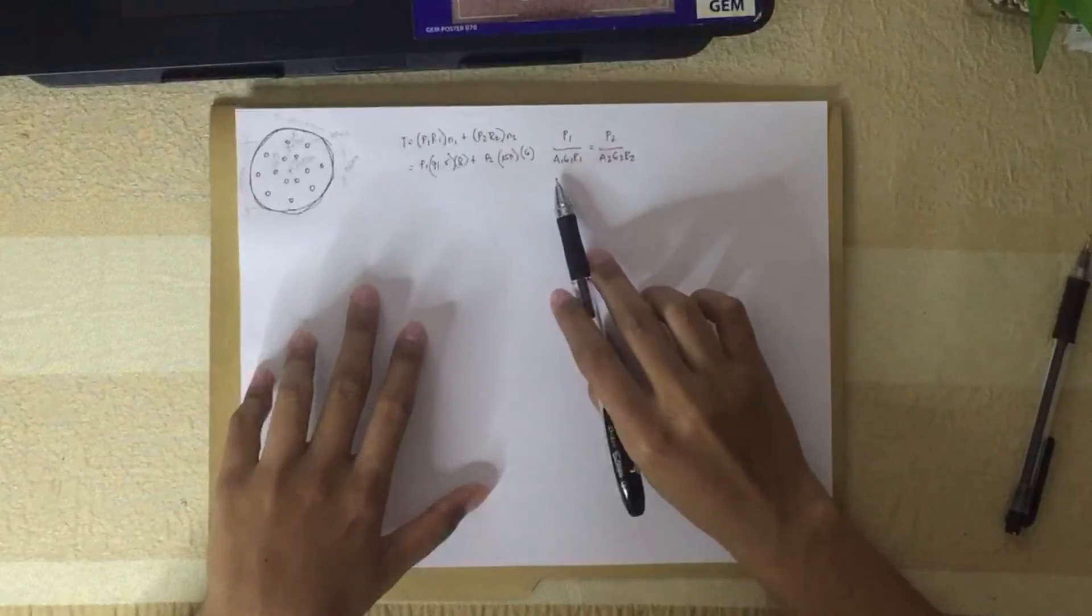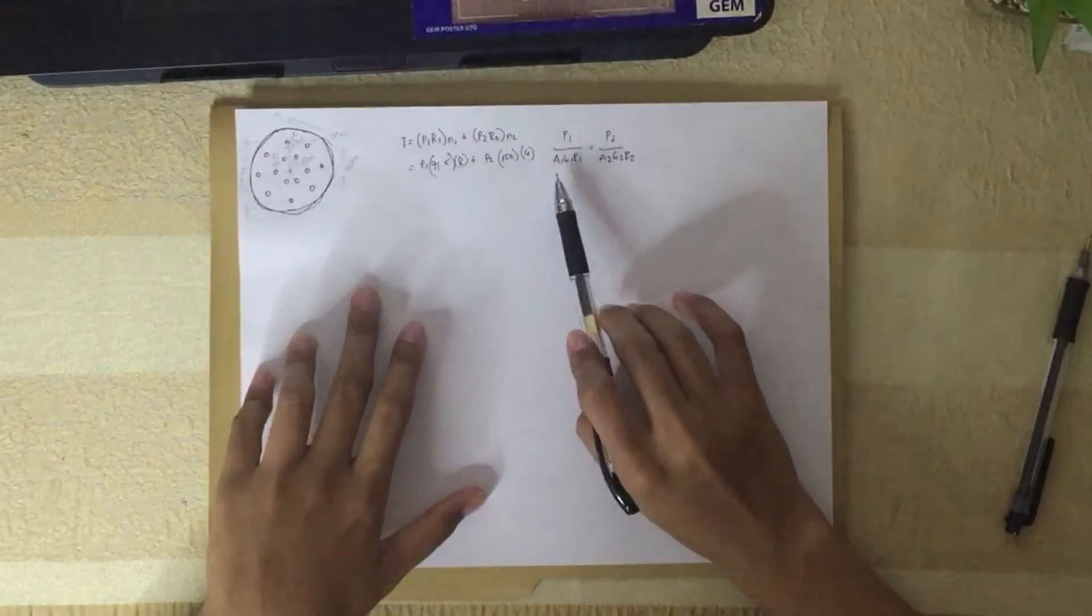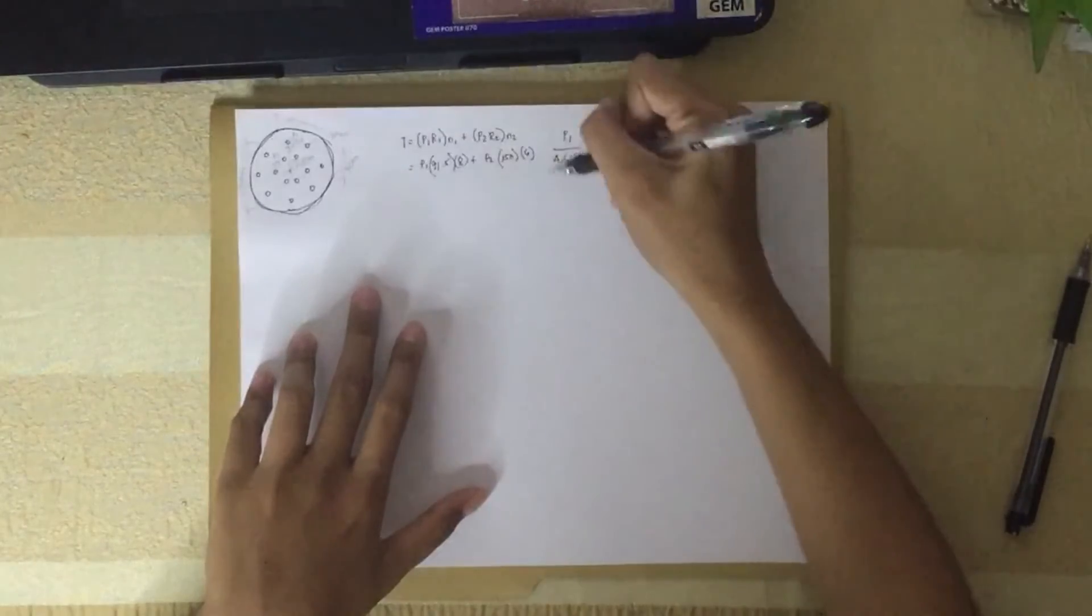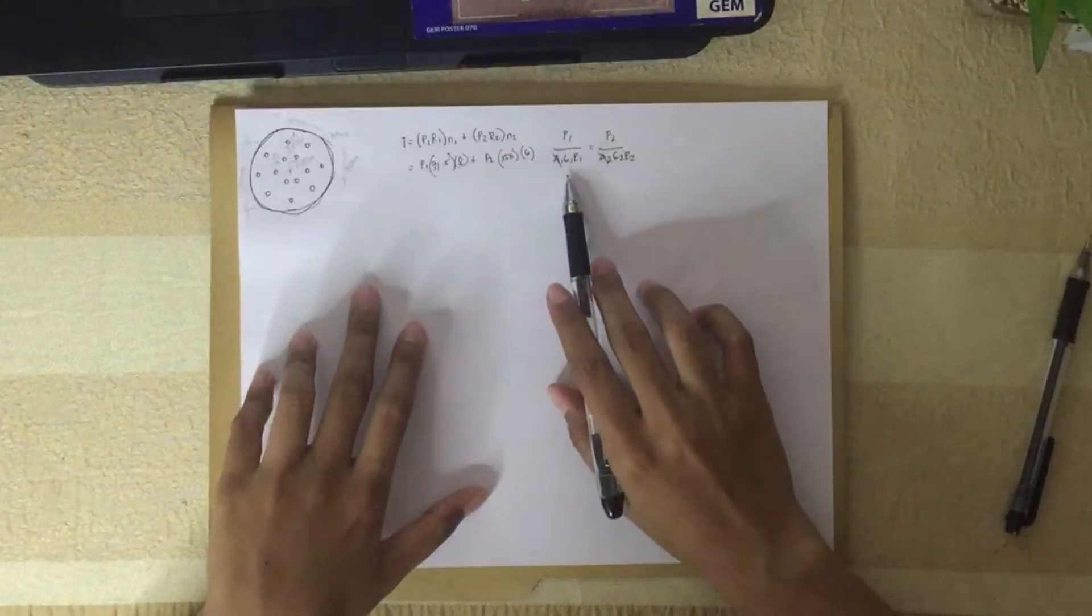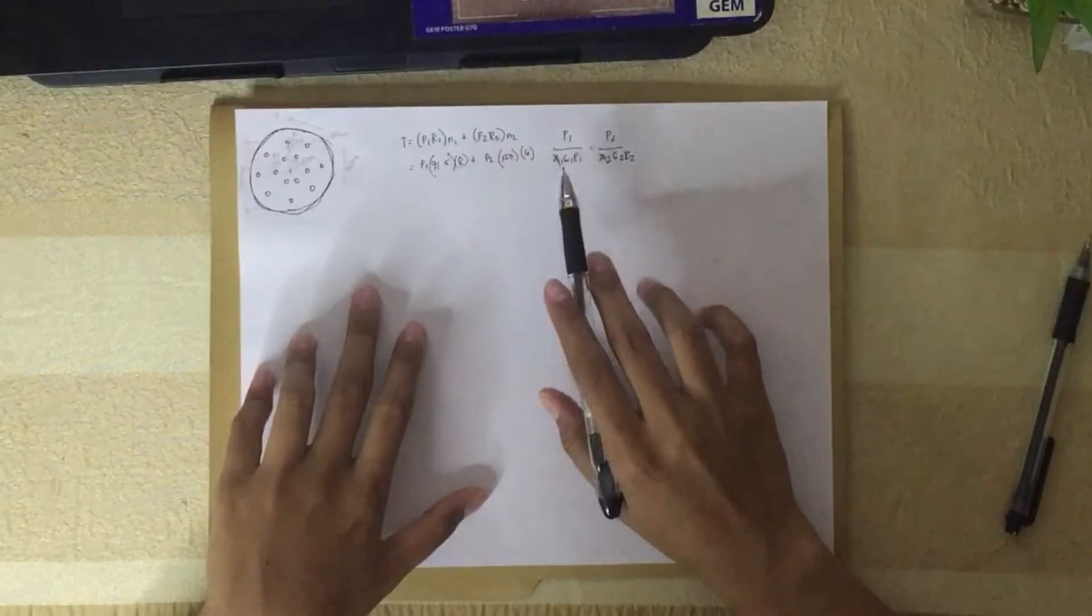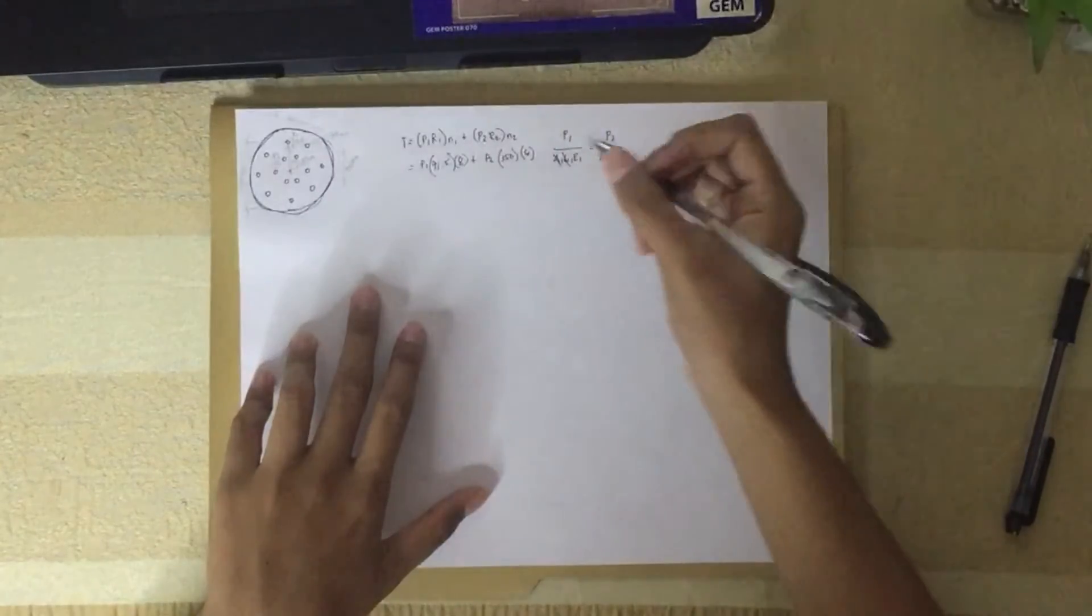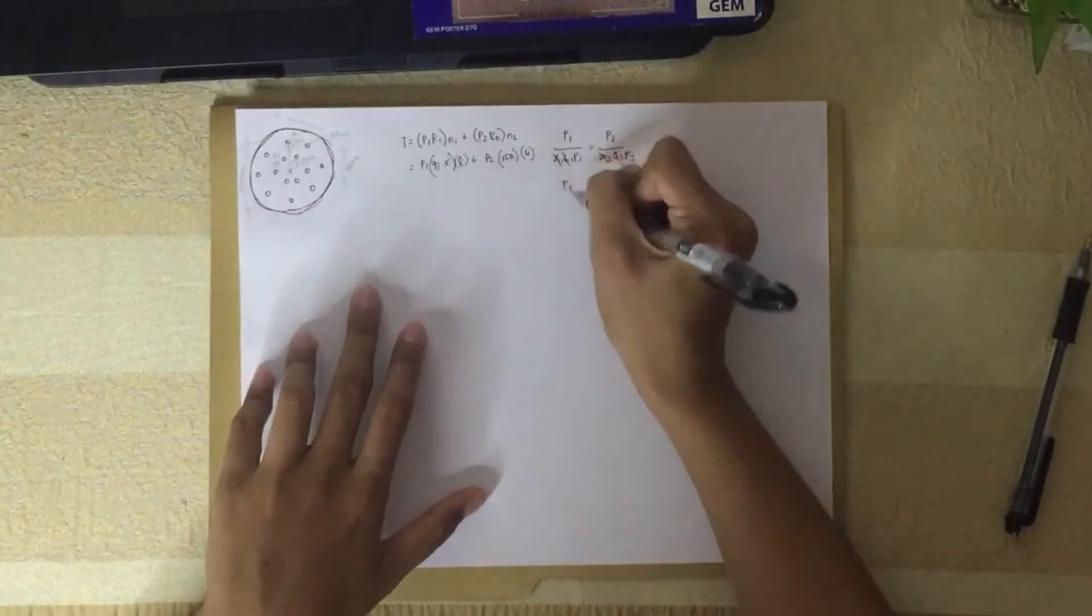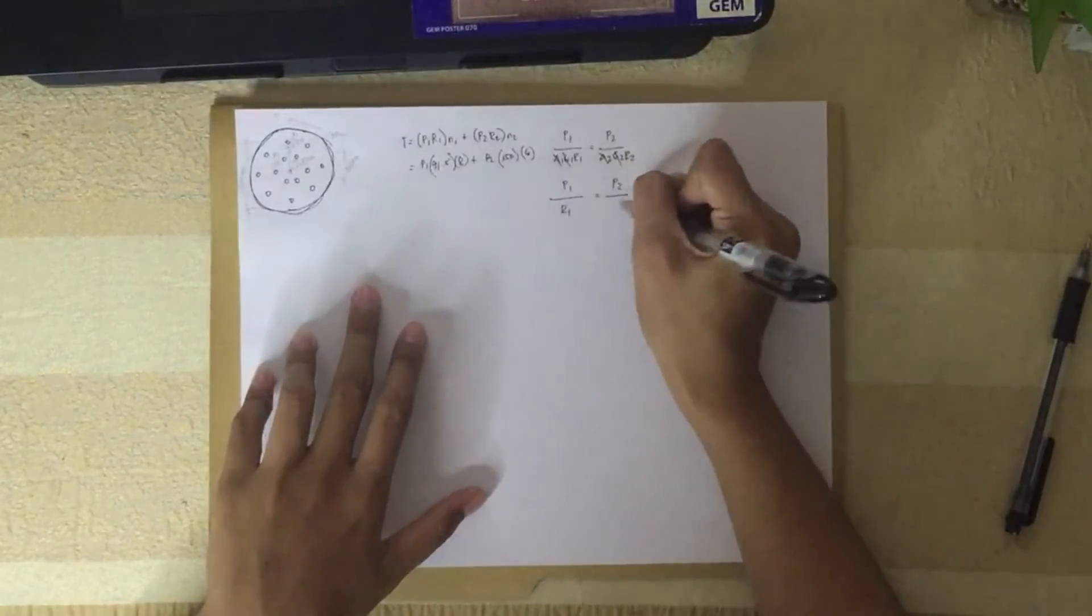Since the diameter is the same, all uniform at 10 mm, we can cancel that. And they have the same shear modulus since it's all steel, same material, so G1 and G2 cancel. So we're left with P1 over R1 equals P2 over R2.